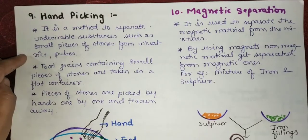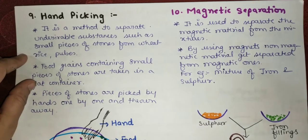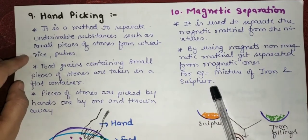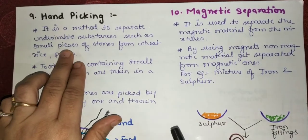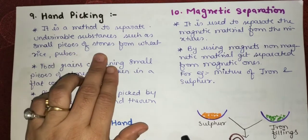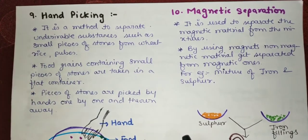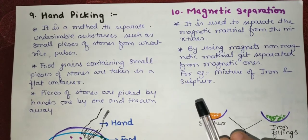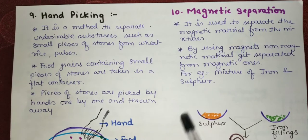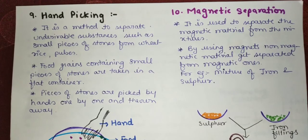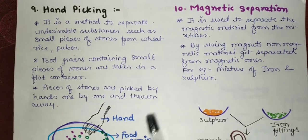Next is the hand-picking method. It is a method to separate undesirable substances such as small pieces of stones from wheat, rice, or pulses. We simply pick out the stones by hand and discard them. As shown in the picture, stones and food grains or pulses can be separated this way.